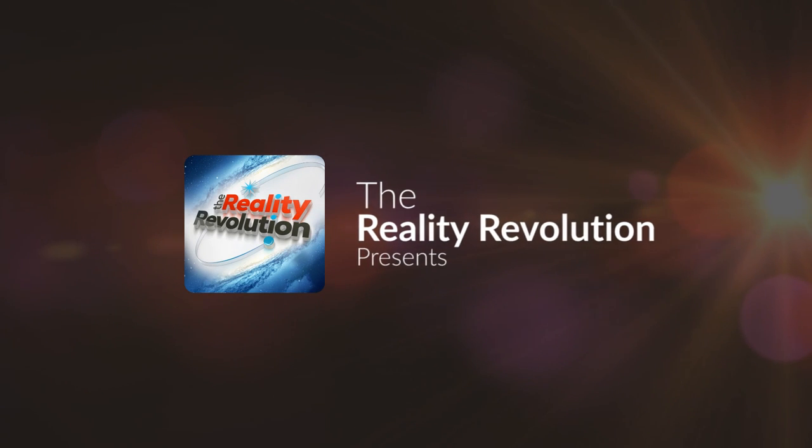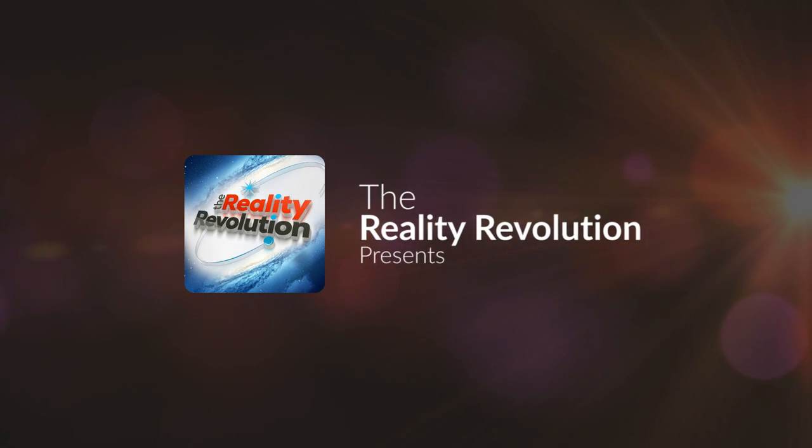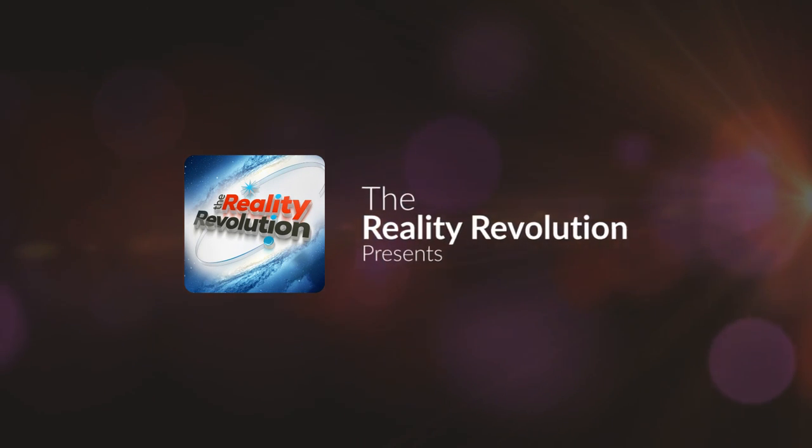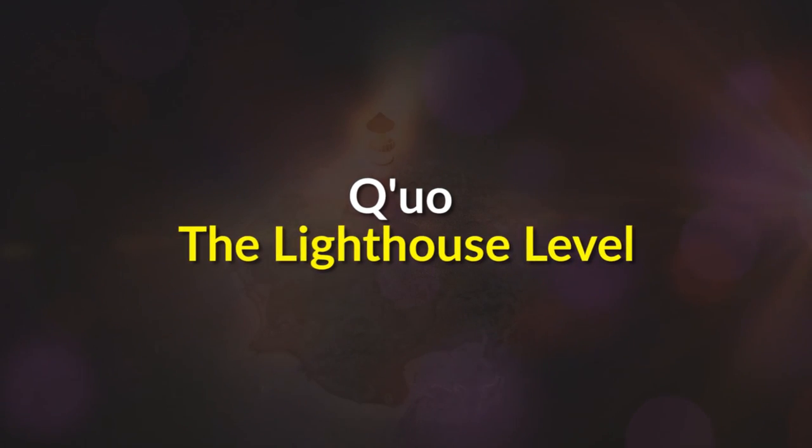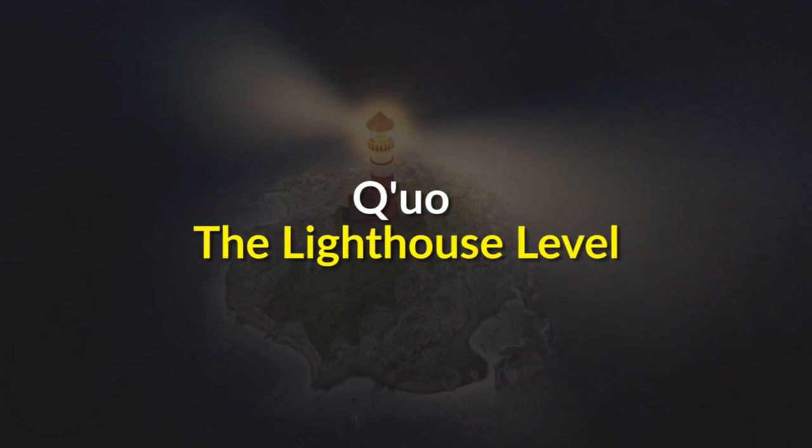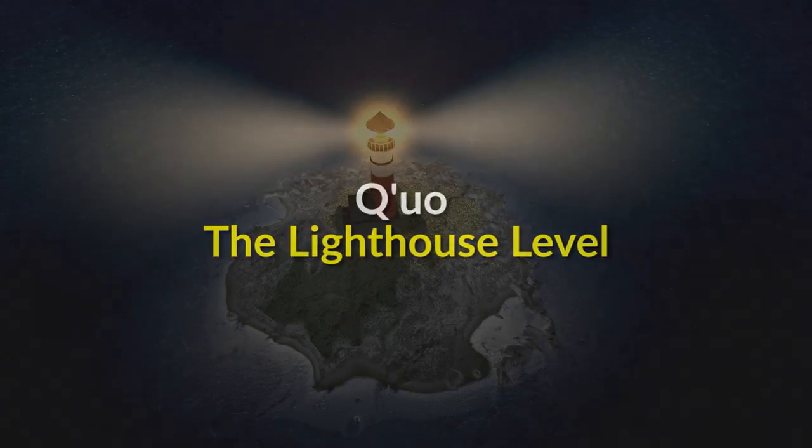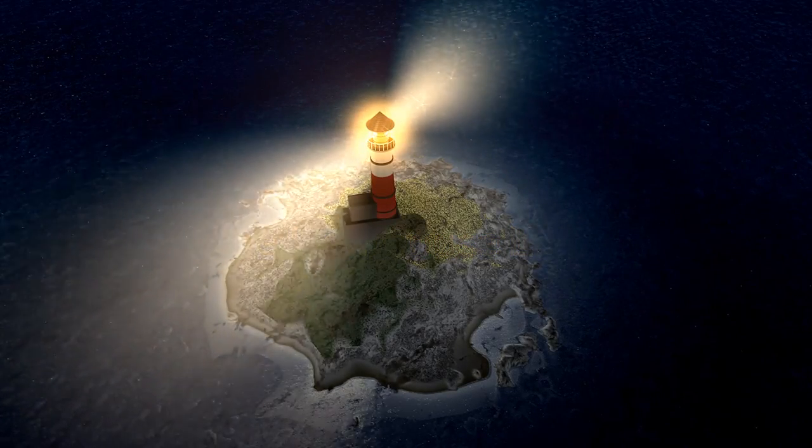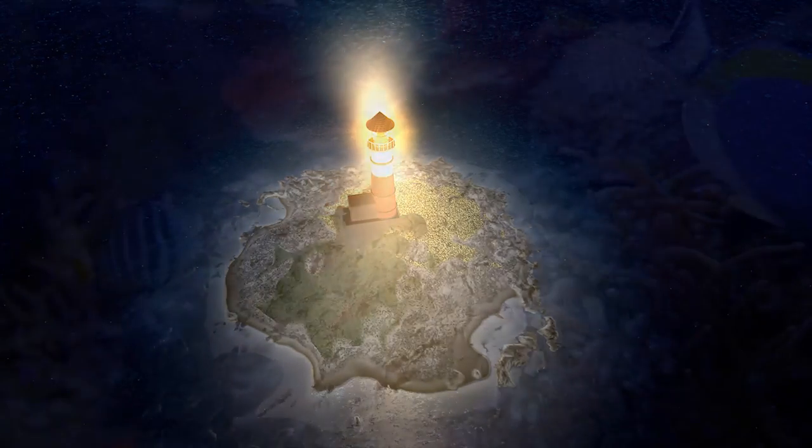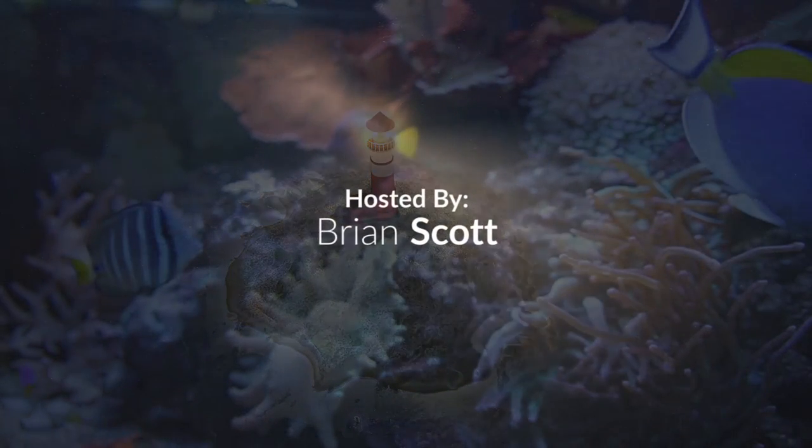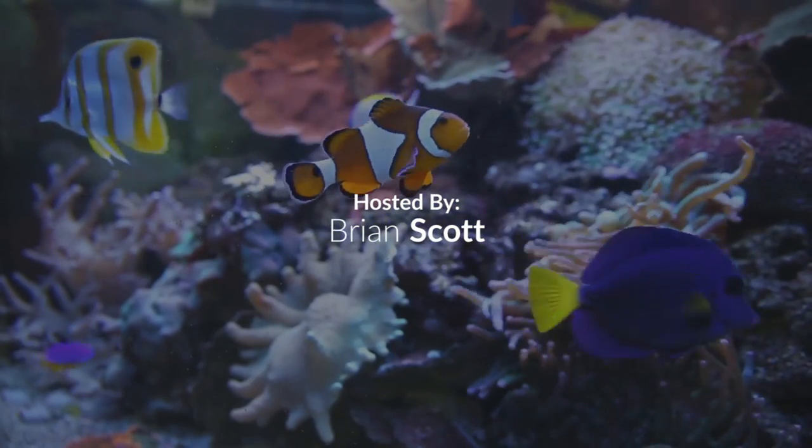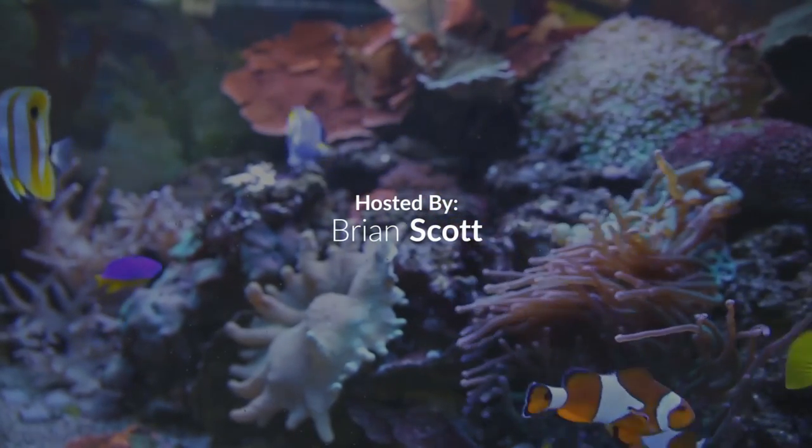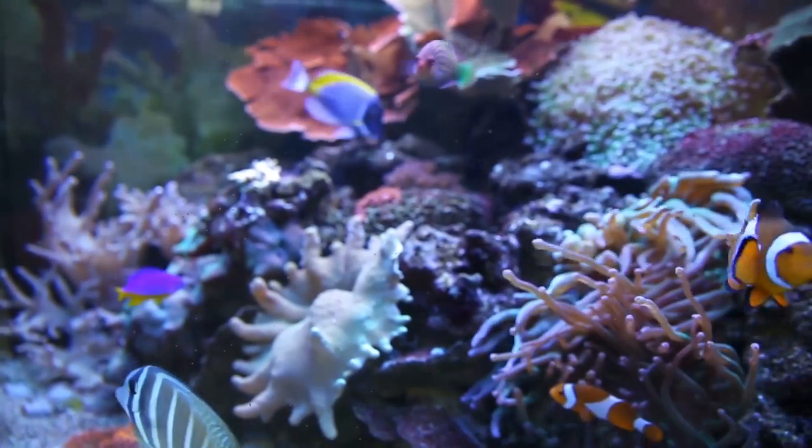Welcome to the Reality Revolution. I am your host, Brian Scott. Today I wanted to dedicate an episode to a chapter that Carla Rueckert wrote in her book The Choice and some additional material on the lighthouse level. This level, as Carla describes it, is the combination of the indigo and violet ray level on how we can use this level and use it in work in consciousness.